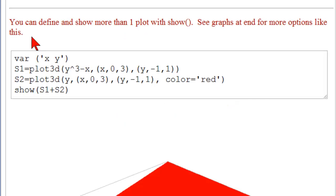One of the nice things about using the command show is that you can define and show more than one plot using show. You can see lots of graphs at the end of this sage file with more options for this. Here we've gone back to variables x and y. And our first plot, which we've now named s1, is our plot that we've been doing all the time. And then we have a second plot where we're just going to plot the plane z equal to y in the same range.